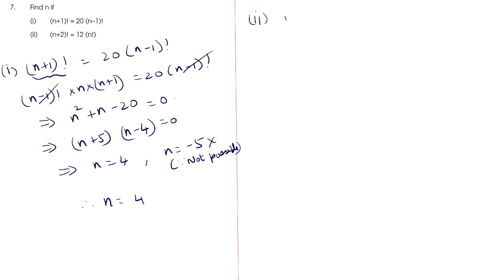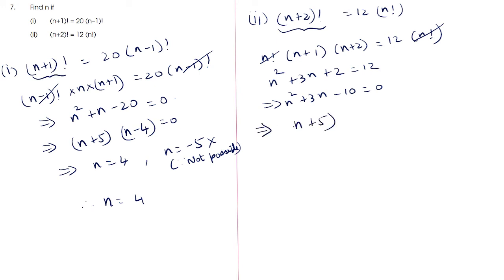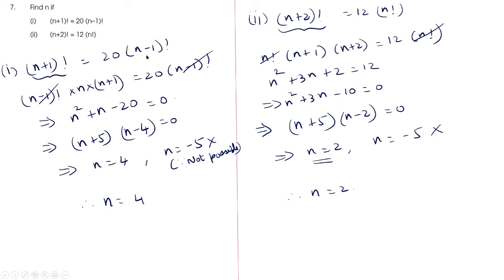Second subdivision: (n + 2)! = 12 × n!. Writing (n + 2)! as n! × (n + 1)(n + 2), and cancelling n!, we get (n + 1)(n + 2) = 12, giving n² + 3n + 2 = 12, or n² + 3n - 10 = 0. Factoring: (n + 5)(n - 2) = 0, so n = 2 or n = -5. Since n = -5 is not possible, n = 2.